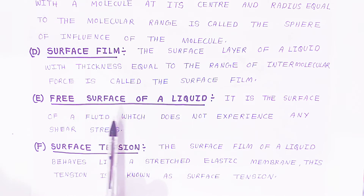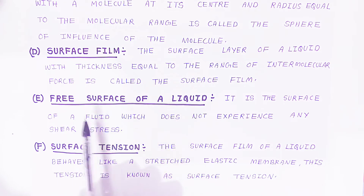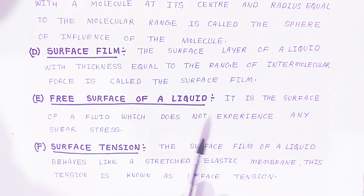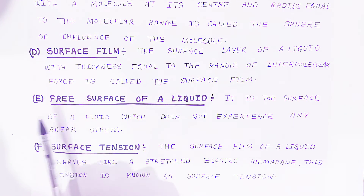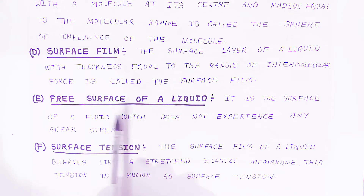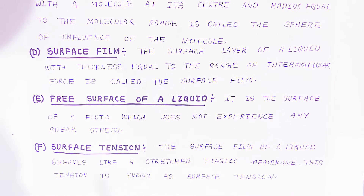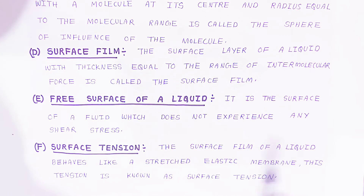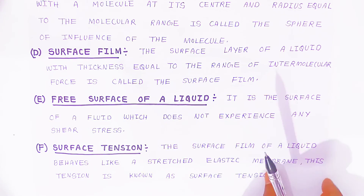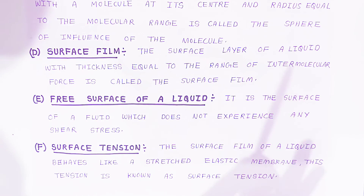Free surface of liquid: the surface of a fluid which does not experience any shear stress is called the free surface of the liquid. Surface tension: if the surface film of a liquid behaves like a stressed elastic membrane, then the tension in that surface is known as surface tension. These are the very important properties of fluid we have covered in this video.